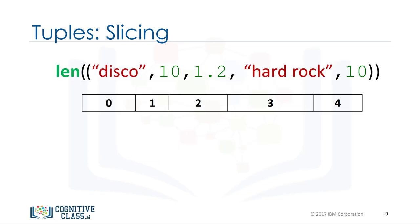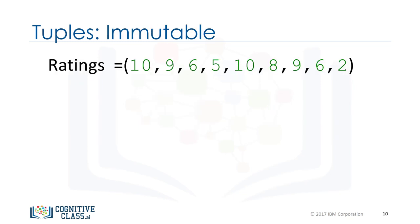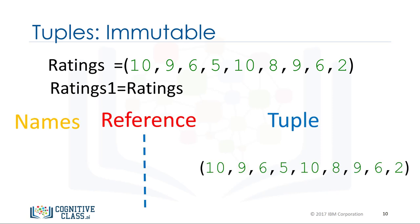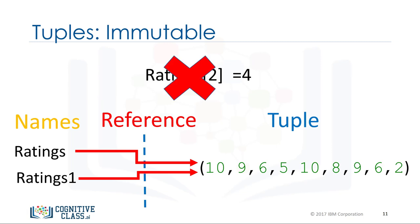We can use the len command to obtain the length of a tuple. As there are five elements, the result is five. Tuples are immutable, which means we can't change them. Each variable does not contain a tuple, but references the same immutable tuple object. Because tuples are immutable, ratings one will not be affected by a change in ratings — i.e., we can't change it.